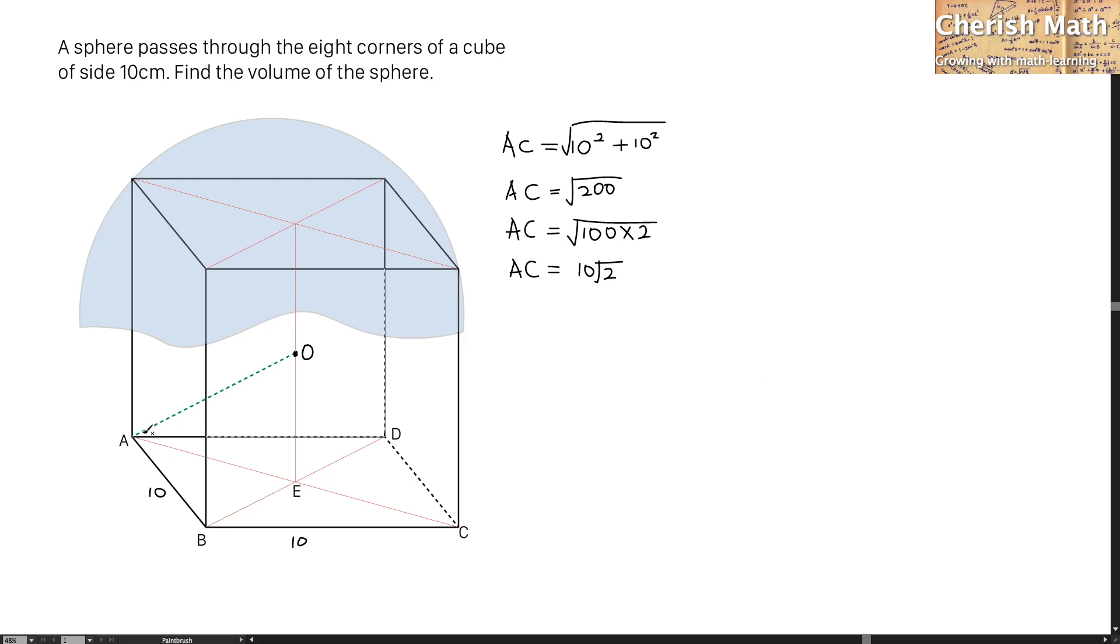The next step, we have to find what is the length of AE, which is connecting from the corner A to the center of the base of this cube. AE is exactly half of AC, which is 10 root 2. And when I simplify it, I'm going to get 5 root 2.